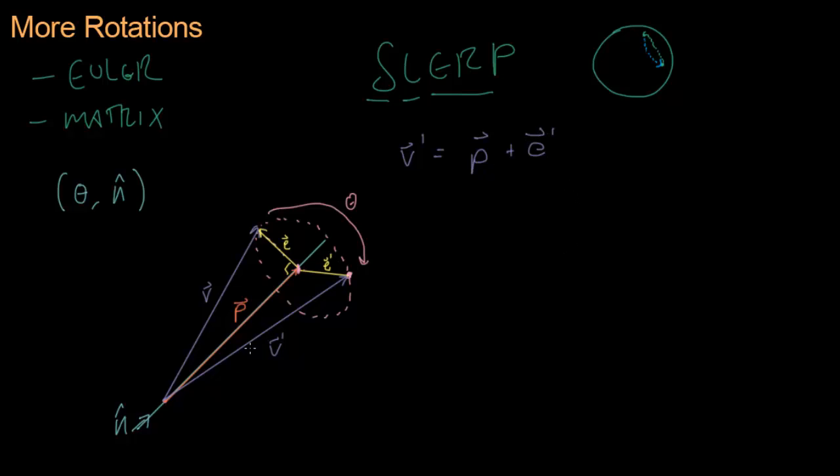Let's figure out how we can get P and E prime in terms of V and N, and theta, which were our original values. So P, as you can see, is just the projection of V onto N.